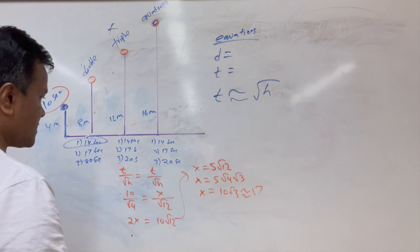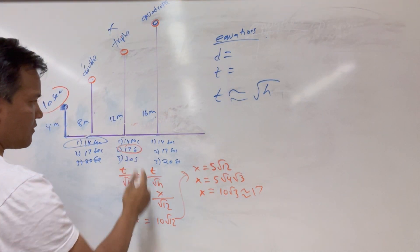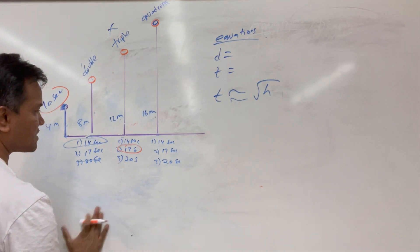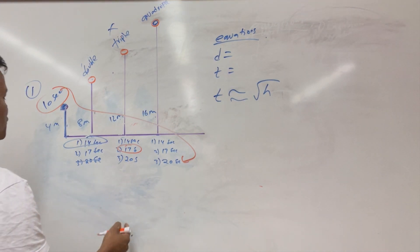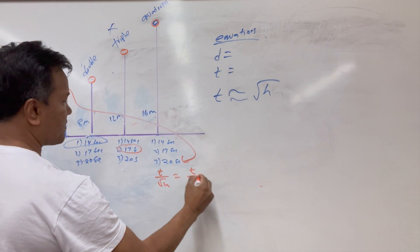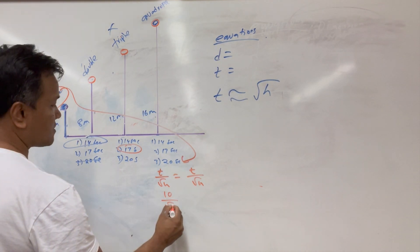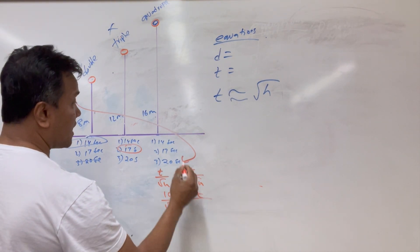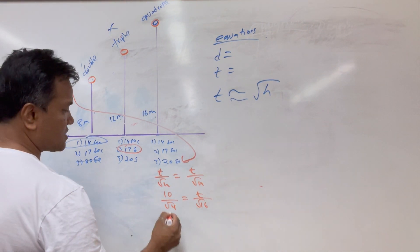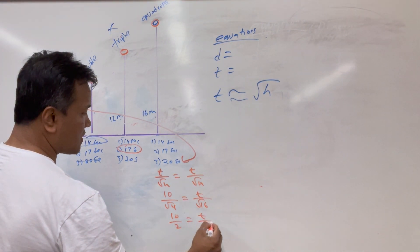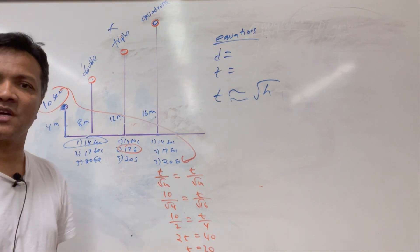And you have to quadruple the distance to double the time — we already proved that. You can show it again: 10 over the square root of 4 equals t over the square root of 16. That gives 10 over 2 equals t over 4, so 2t equals 40 and t equals 20 seconds.